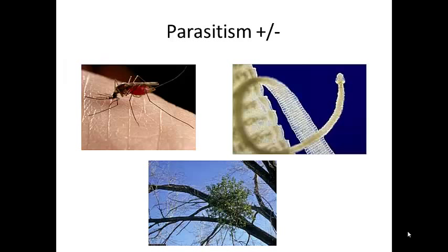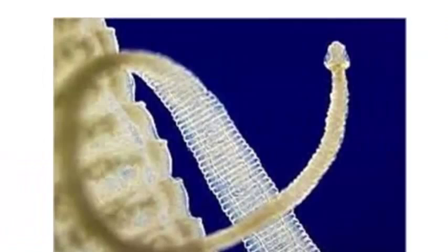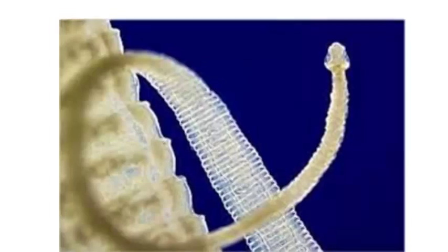Parasitism is a plus-minus relationship where one species benefits and the other is harmed. The parasite feeds off a living host. In some situations the parasite ends up killing the host, but in others the parasite is simply an annoyance, like in the example of a mosquito biting a human. Another example of parasitism is a tapeworm that attaches itself to the inside of a dog's digestive tract. There are a few types of tapeworms that cause serious disease in humans, but those are rare in the United States.